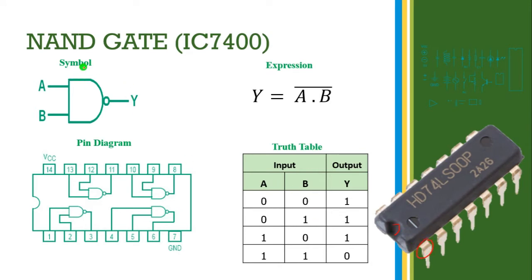This is the symbol of the NAND gate — this is the 2-input NAND gate. This IC is also a 2-input NAND gate IC. One input is A and another input is B. This is the AND gate symbol, and one more bubble is connected here. This bubble is indicating the NOT operation.